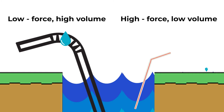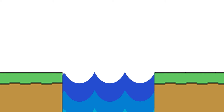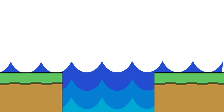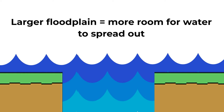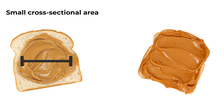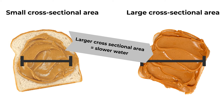The cross-sectional area is dependent on features like the surrounding floodplain. For example, in an area with a wide floodplain, there is more room for the water to spread out. You can think of it like peanut butter spread across a sandwich face. If the peanut butter stays in the center, there is only a small cross-sectional area. If it goes all the way to the edge of the bread, there is a larger cross-sectional area. With a larger cross-sectional area, the water can usually slow down a lot more than with a smaller cross-sectional area.